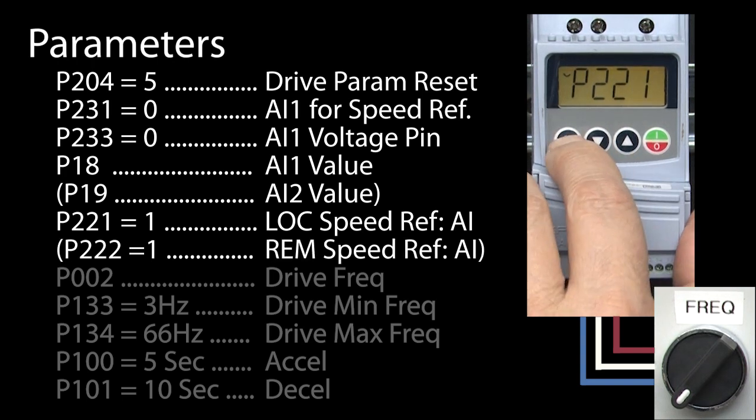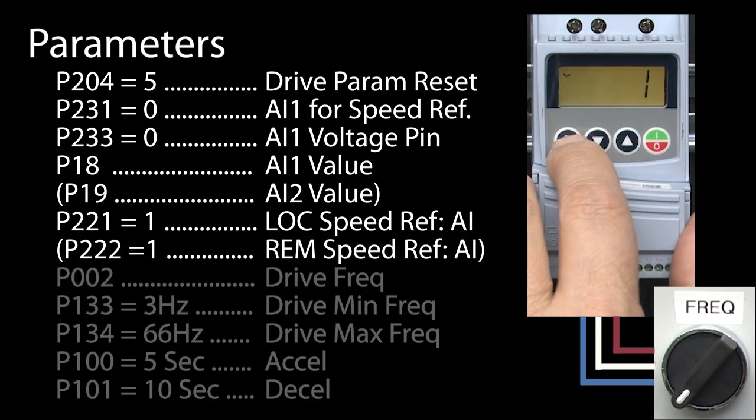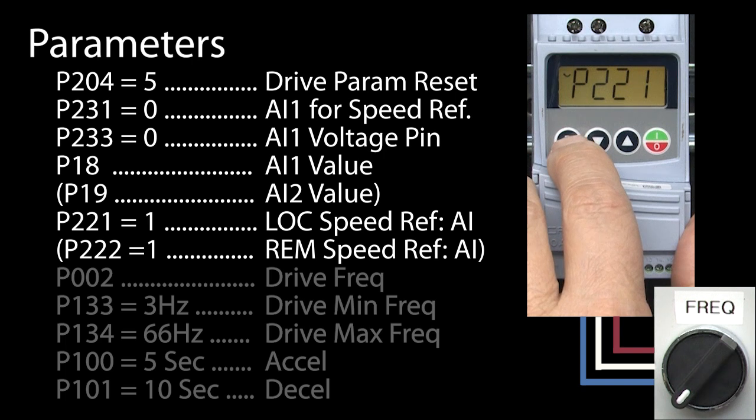You would use parameter 222 if you are setting this up in remote mode. The programming manual says we need to enter a 3 to tell the drive to use the potentiometer, but that's the potentiometer on the potentiometer option module, which has its own dedicated configuration. We are using a potentiometer on analog input 1, so we need to enter a 1 for parameter 221 to tell the drive to get its speed reference from analog input 1.